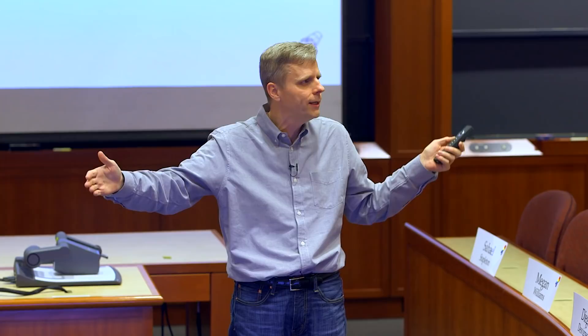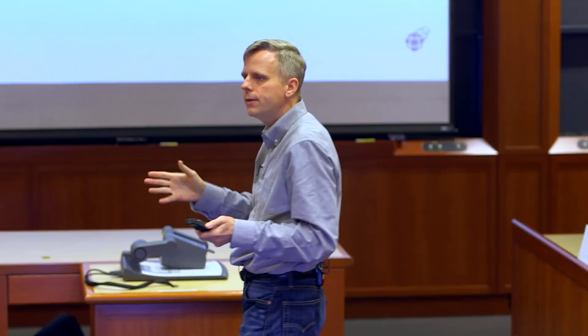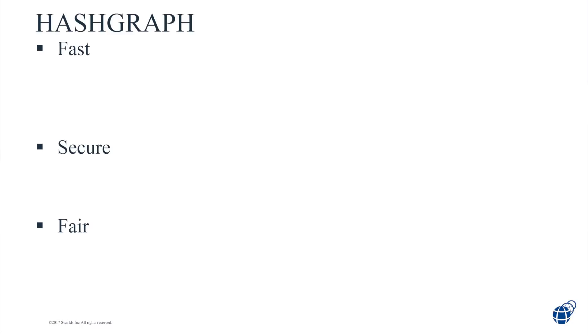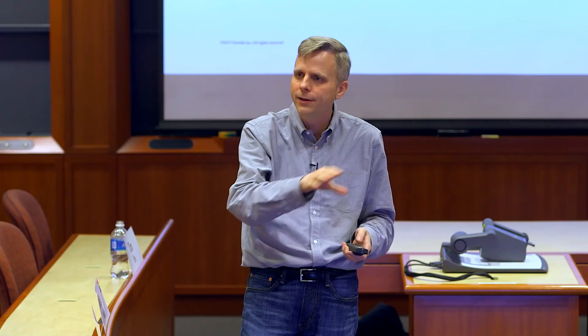Hashgraph is the consensus algorithm — the way computers talk to each other and come to agreement on transactions. Hashgraph is fast, secure, and fair. These are the three main things you want in a ledger. It's faster and more secure than other ledgers, and it's fair in a way the other ledgers are not. The reason it's unusual is because it achieves consensus in a totally different way — not like Bitcoin, Ethereum, Paxos, Raft, PBFT, Casper, or IOTA.